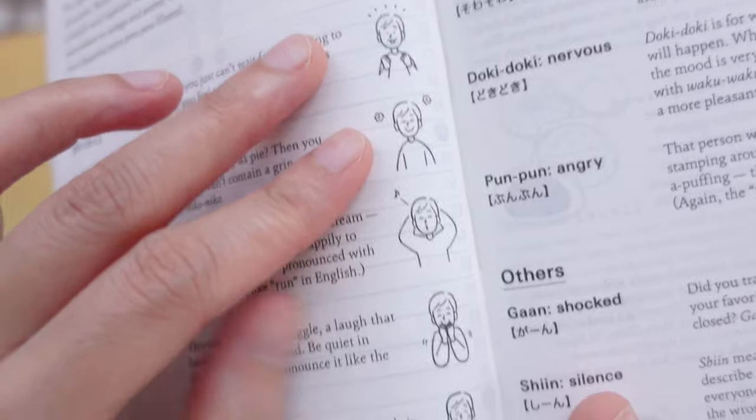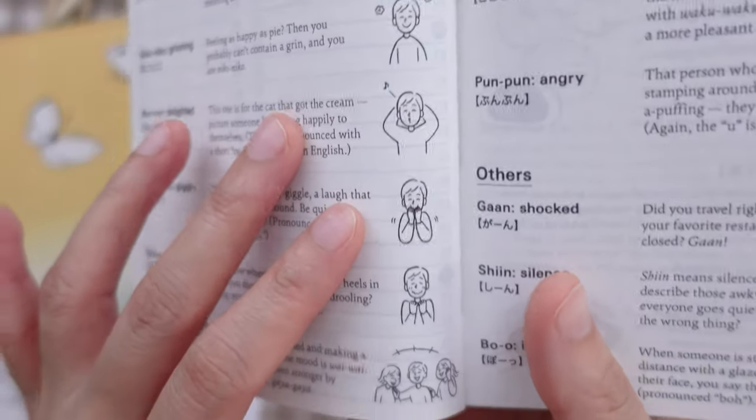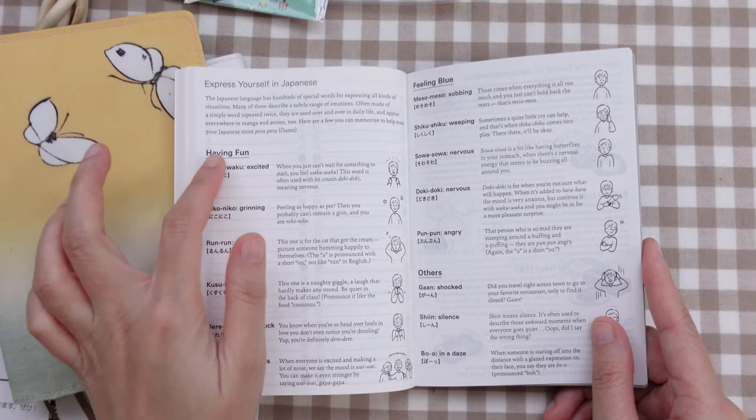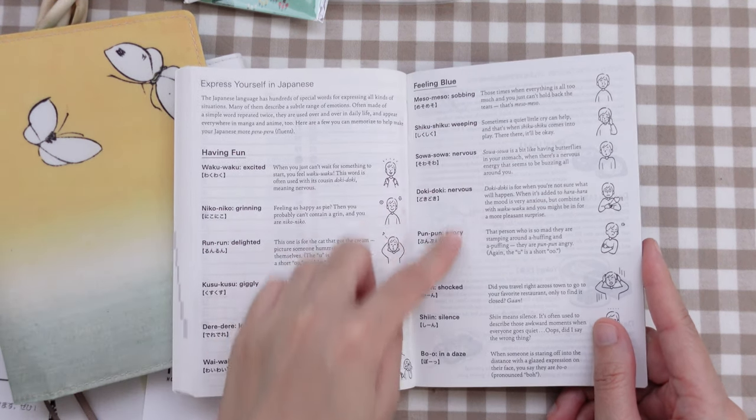So like waku waku for excited. They have mini illustrations as well. After my pen test, I plan to doodle on these. There are expressions for when you're having fun, for when you're feeling blue, and others.